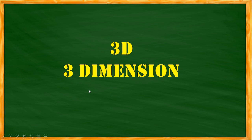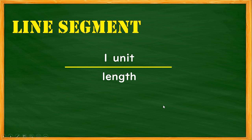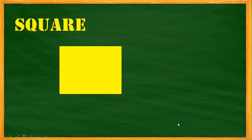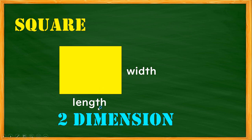To further understand volume, let's first define 3D or three-dimensional figures. A line segment has a length — we can consider this as one unit, and it is one-dimensional. A line segment can be formed into a square, which has a length and a width. This figure is a two-dimensional figure, and we can find its area or perimeter.